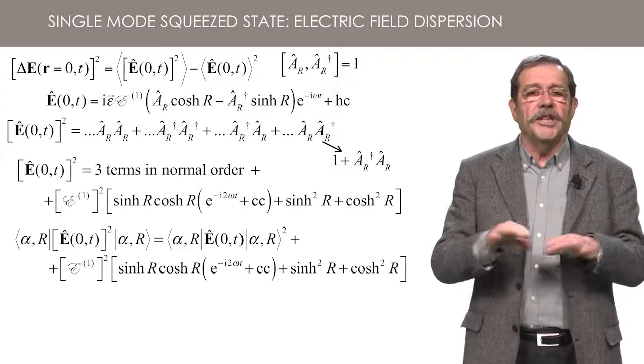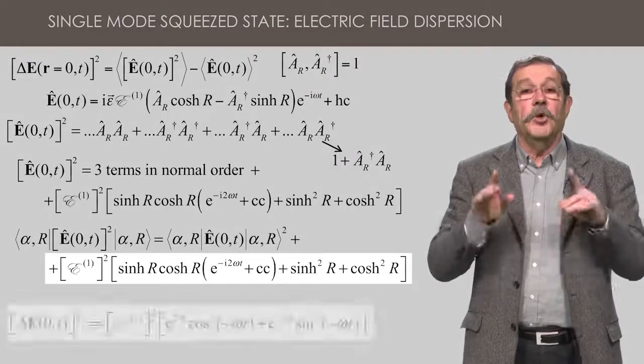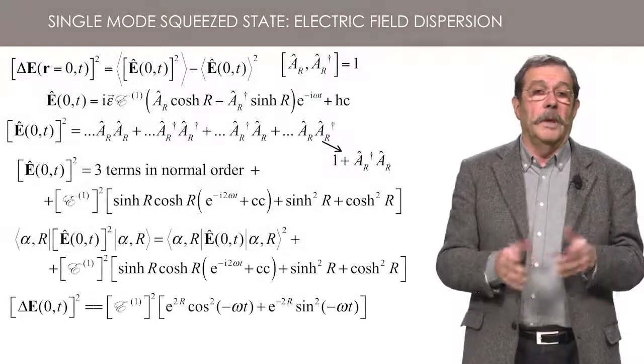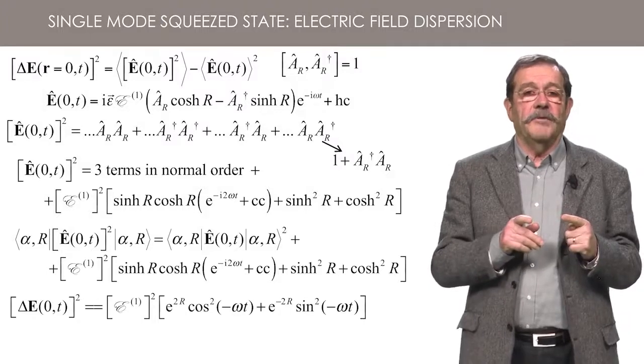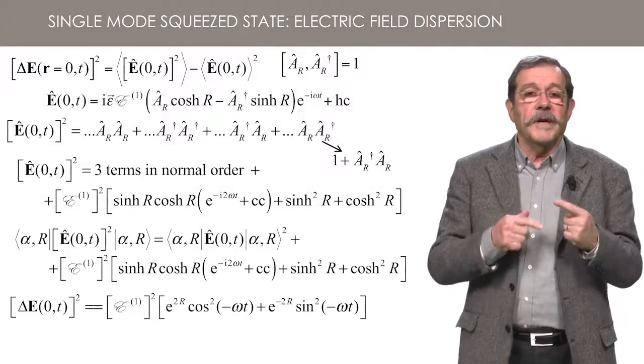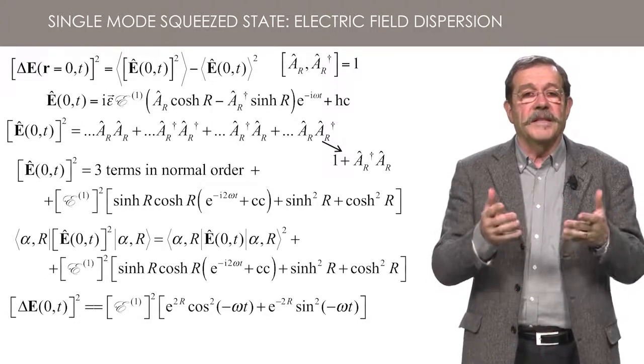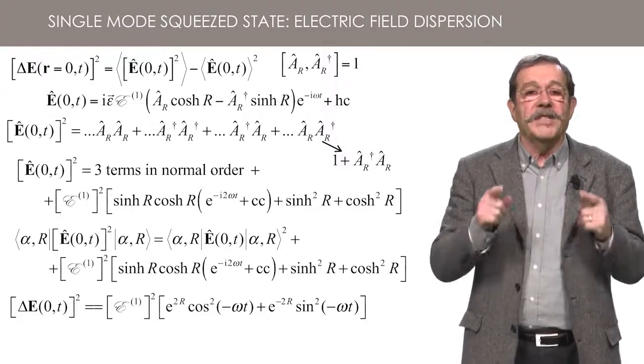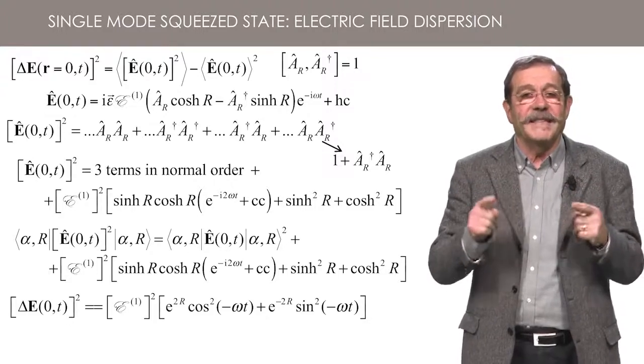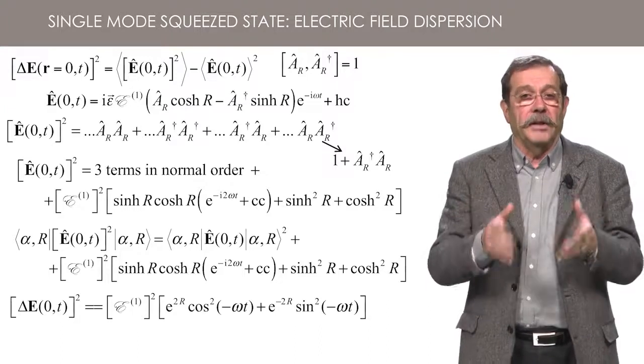Now, a few lines of algebra will allow you to put the variance of E in a remarkable form. This formula expresses the fundamental property of squeezed states. In contrast to quasi-classical states whose variance is constant and equal to E1 squared, the variance of the electric field in a squeezed state varies as a function of time at a given position.